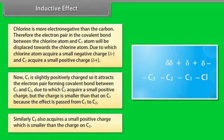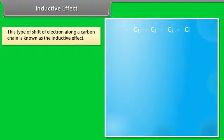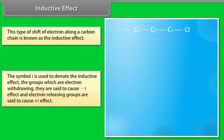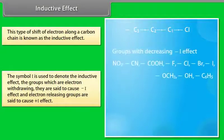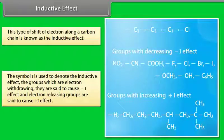Similarly, C3 also acquires a small positive charge which is smaller than the charge on C2. This type of shift of electrons along a carbon chain is known as the inductive effect, symbolized by I. Groups which are electron withdrawing cause a negative I effect, and electron-releasing groups cause a positive I effect.